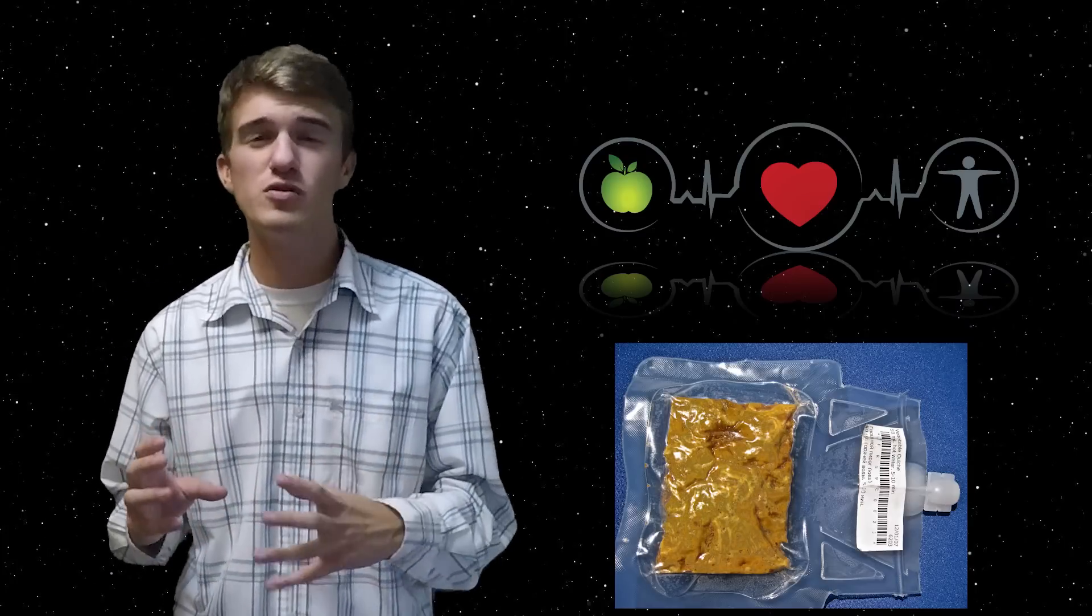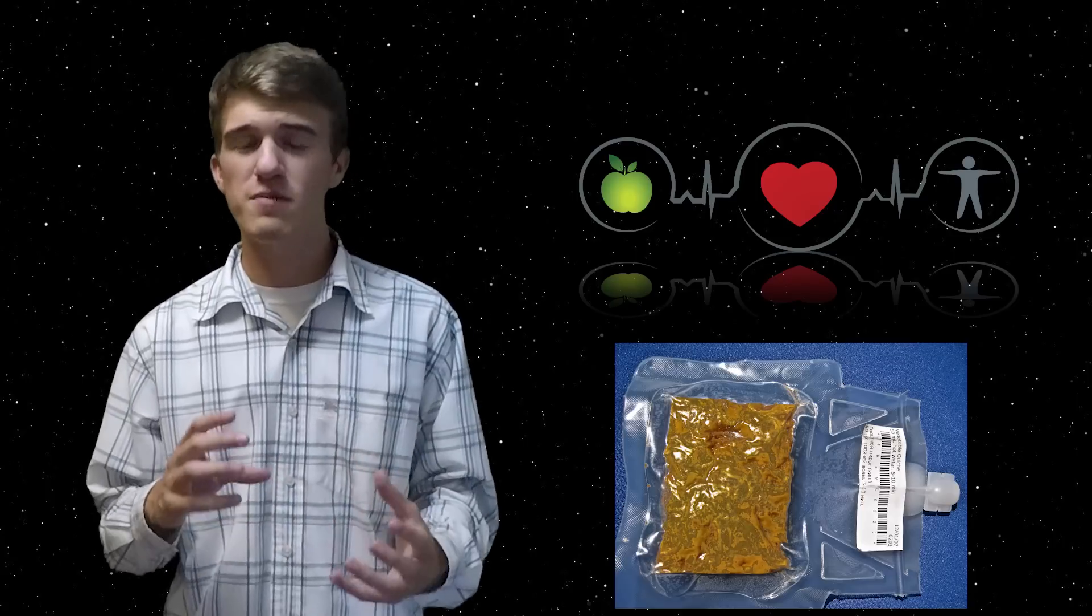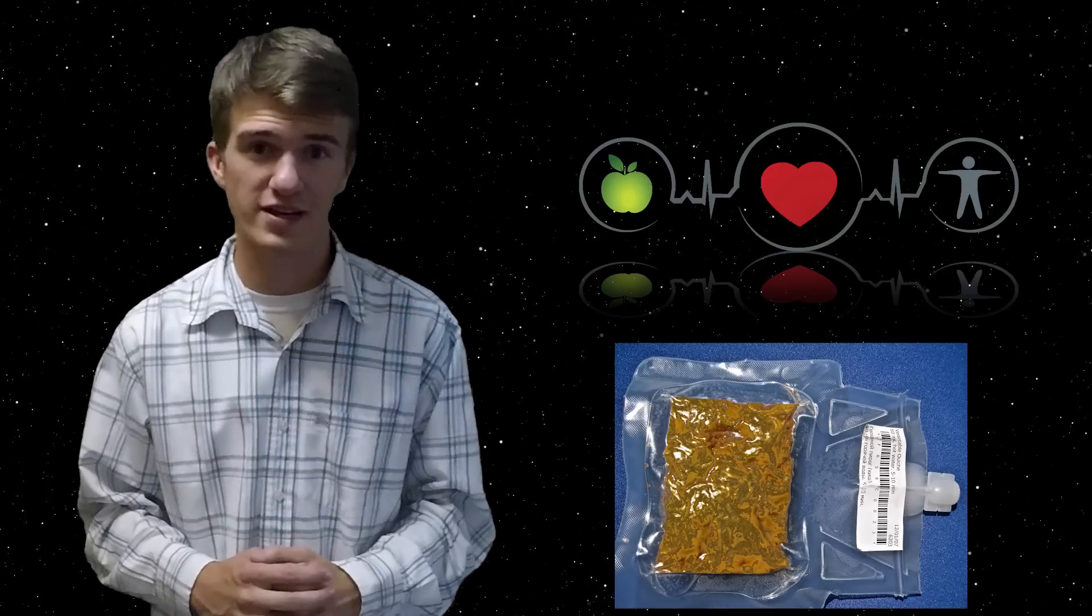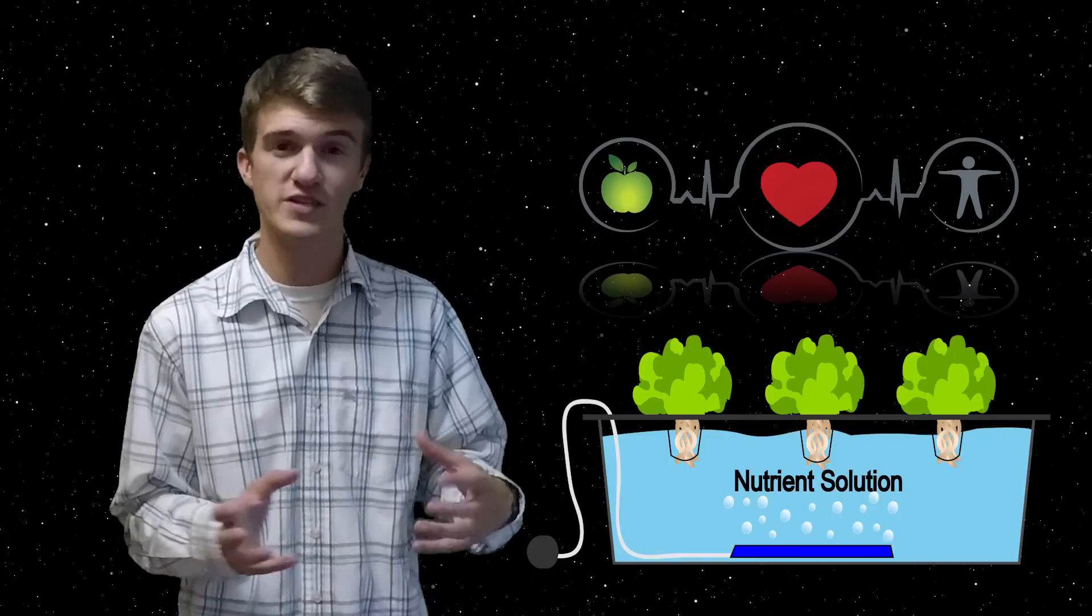It would also cause the food to lose some of its color, therefore you might be eating things that are a little gray, which could also play a psychological effect. Now there actually is a solution to this problem. It turns out scientists believe that if they introduced a hydroponic section into the capsule where they were able to grow fresh vegetables, that would bring their morale up and enjoy what they're eating a little bit more.